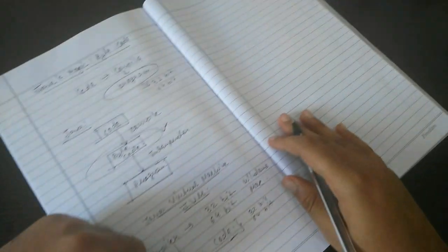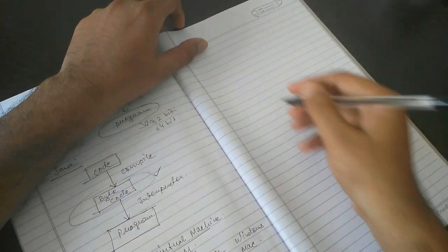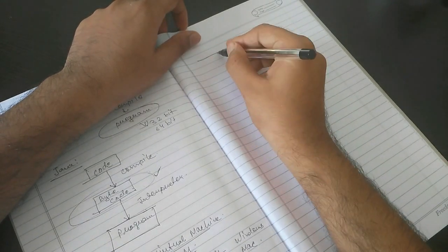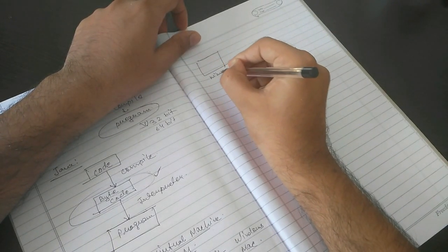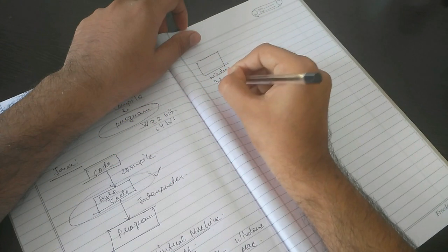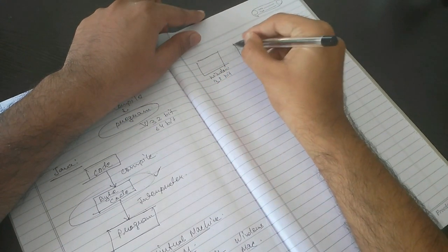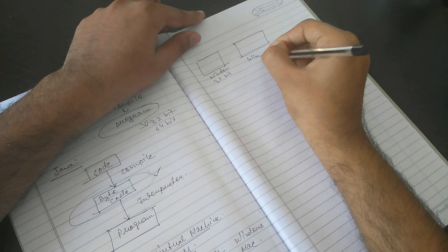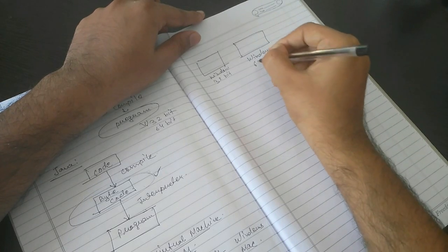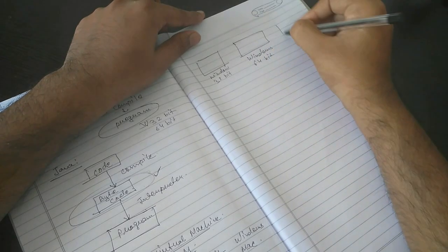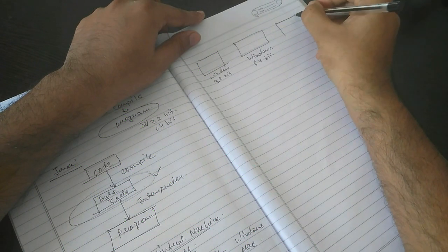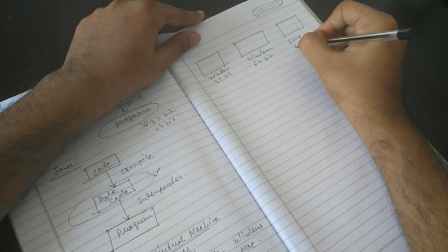Suppose you have a machine which is Windows 32-bit, Windows 64-bit, and Linux 64-bit.